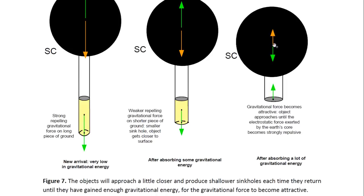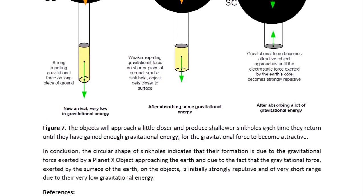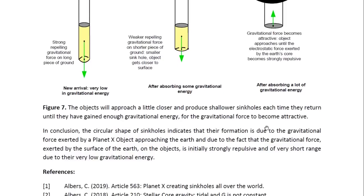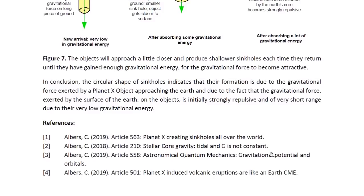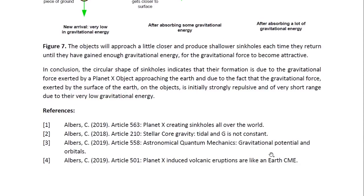Eventually the object gains enough gravitational energy so that the gravitational force exerted by the object on the surface of the Earth — and the surface of the Earth on the object — is attractive, and the two will be attracted. What causes the object not to impact the surface is the fact that it's now repelled by the Earth's positive core, so an electrostatic repulsive force now has its effect on the object. In conclusion, the circular shape of sinkholes indicates that the deformation is due to the gravitational force exerted by a Planet X object approaching the Earth, and due to the fact that the gravitational force exerted by the surface of the Earth on the objects is initially strongly repulsive and of very short range due to the very low gravitational energy. These are the references. This is Dr. Claudia Albers, Planet X physicist. Thank you for watching.